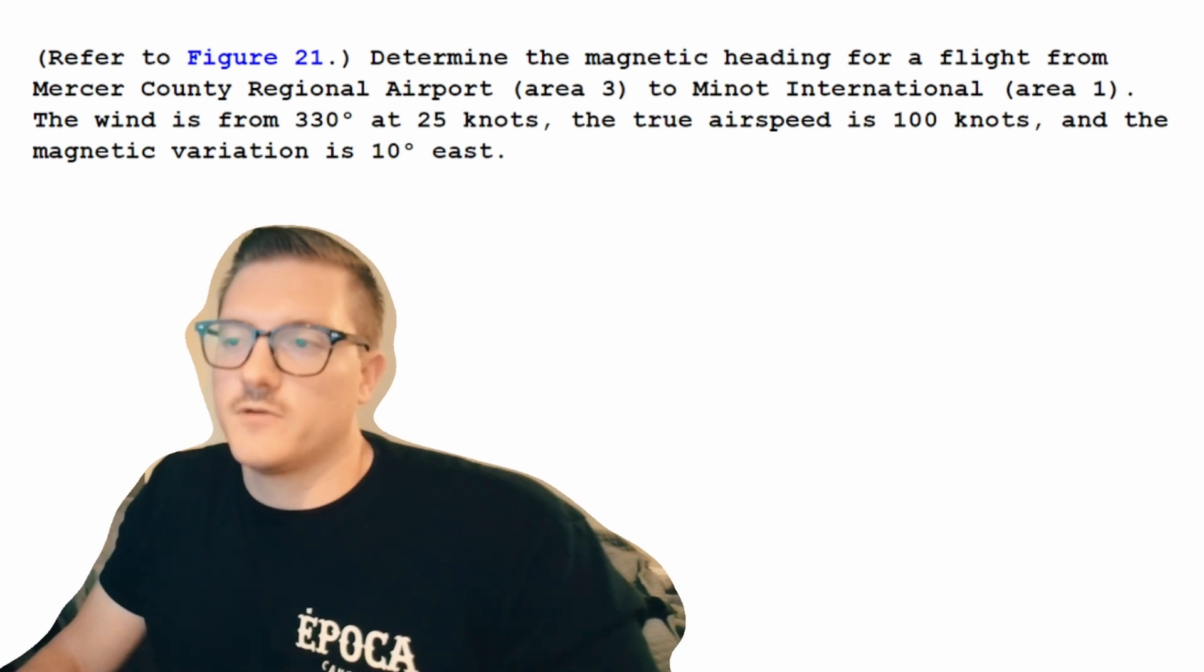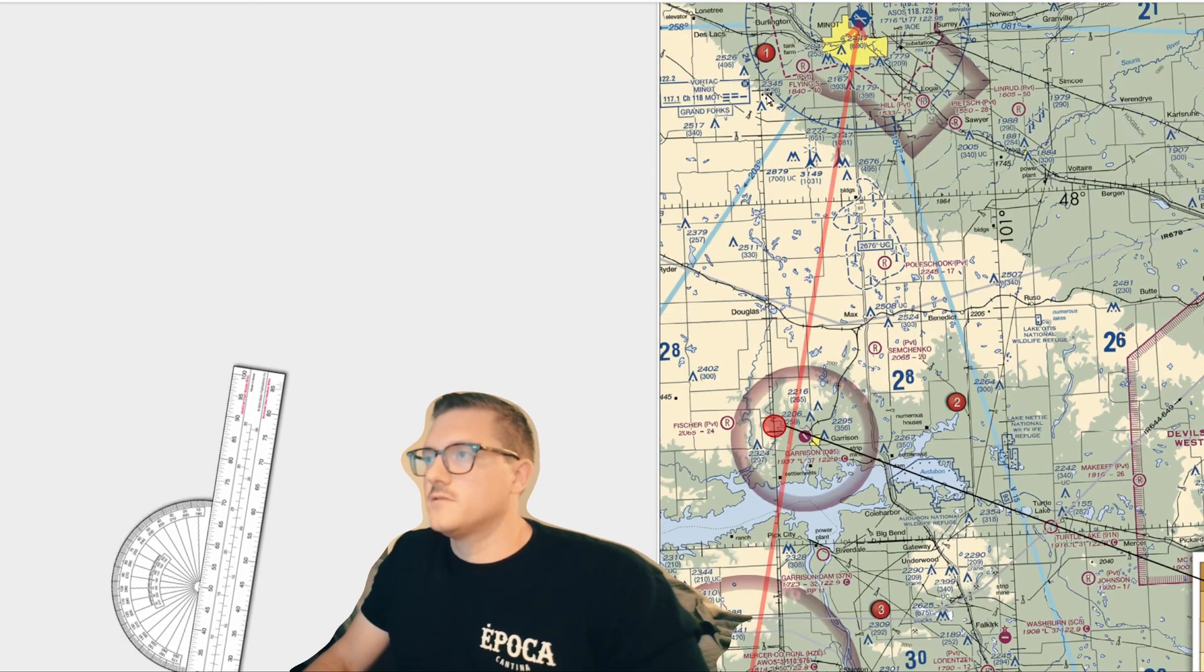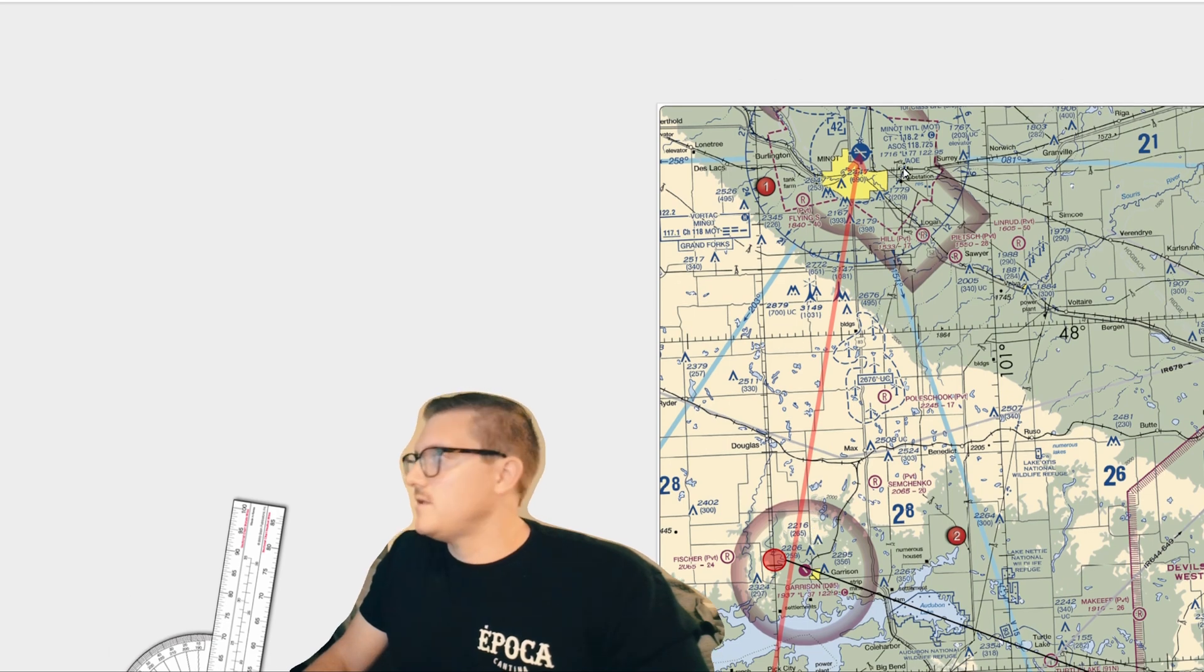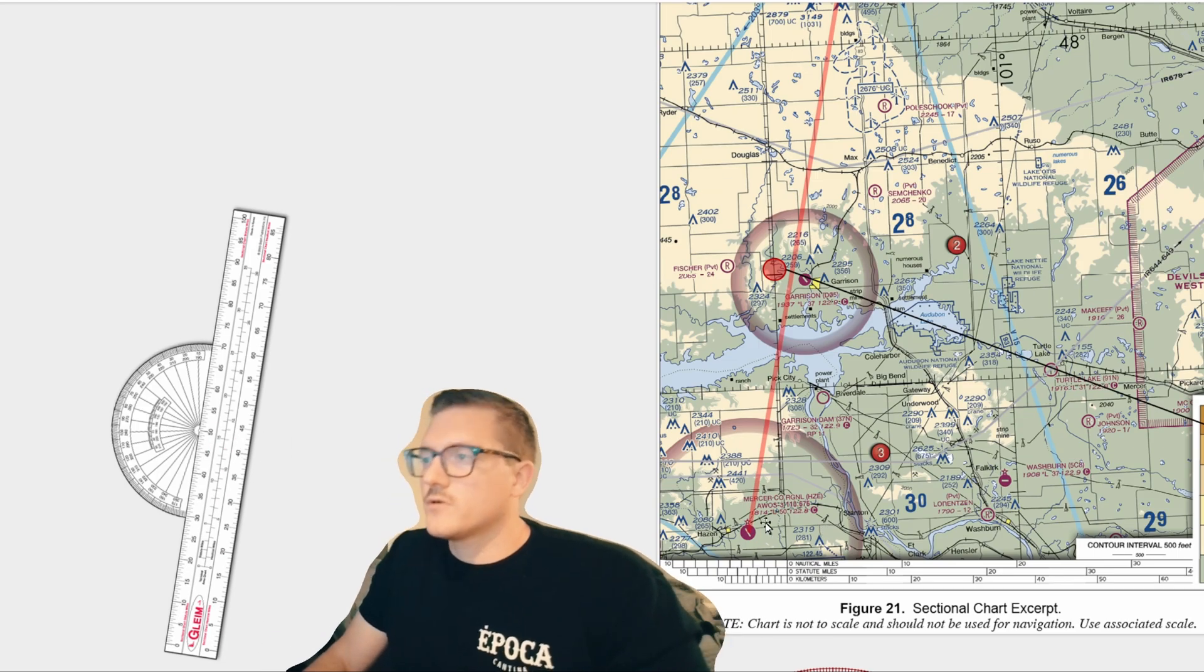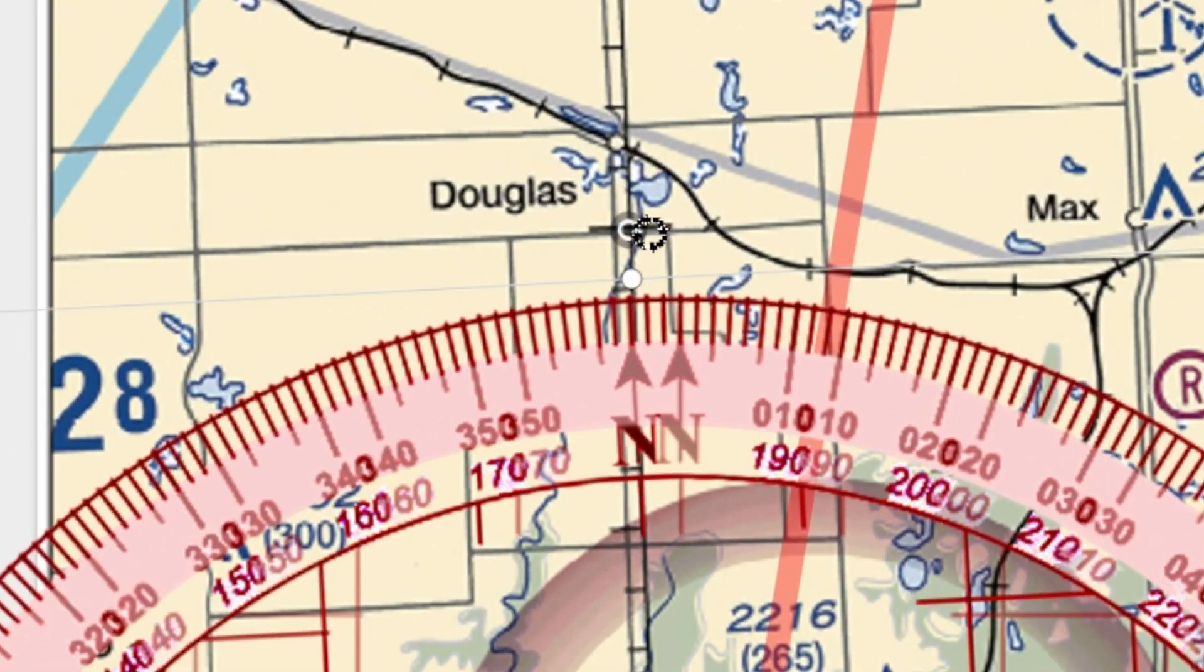Let's go ahead and knock the first part out first and figure out what our true course is. So looking here at the chart, this is figure 21. We're going to look for area 3 and 1. So here's area 1. Area 3 is down here. So we can see the Minot International Airport on area 1 and the Mercer County Regional Airport on area 3.